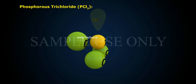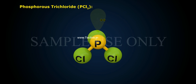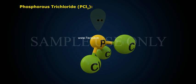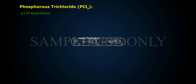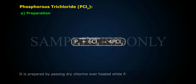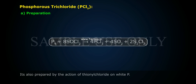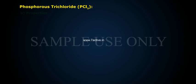Phosphorus Trichloride (PCl3). Preparation: It is prepared by passing dry chlorine over heated white phosphorus. It is also prepared by the action of thionyl chloride on white phosphorus.